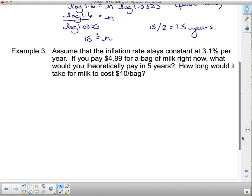And the last question: Assume that the inflation rate stays constant at 3.1% per year. If you pay $4.99 for a bag of milk right now, what would you theoretically - and again theoretically, this is all with math and real life doesn't follow math to a T, it's only predictive - what would we expect to pay for a bag of milk in five years? And the second part of this, how long would it take for a bag of milk to cost $10?